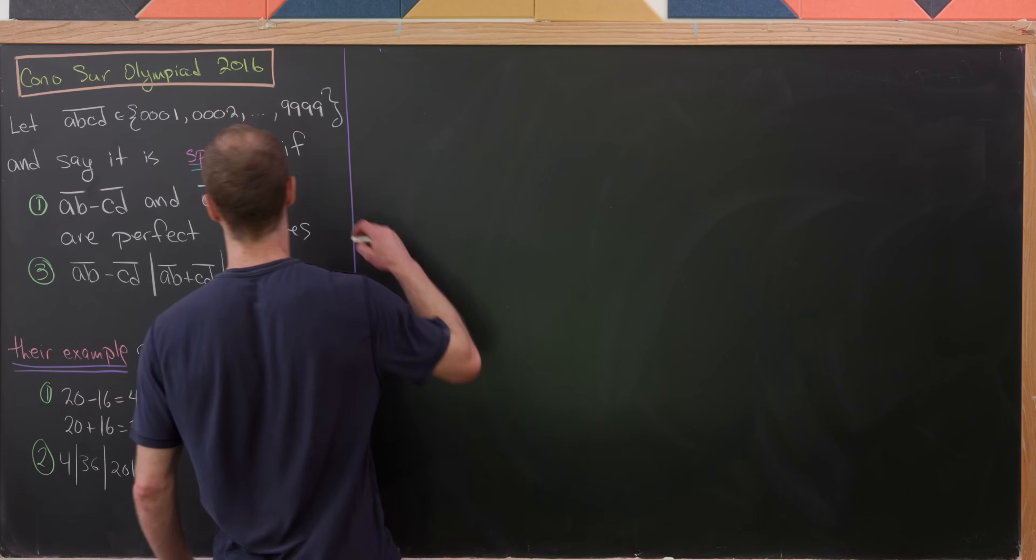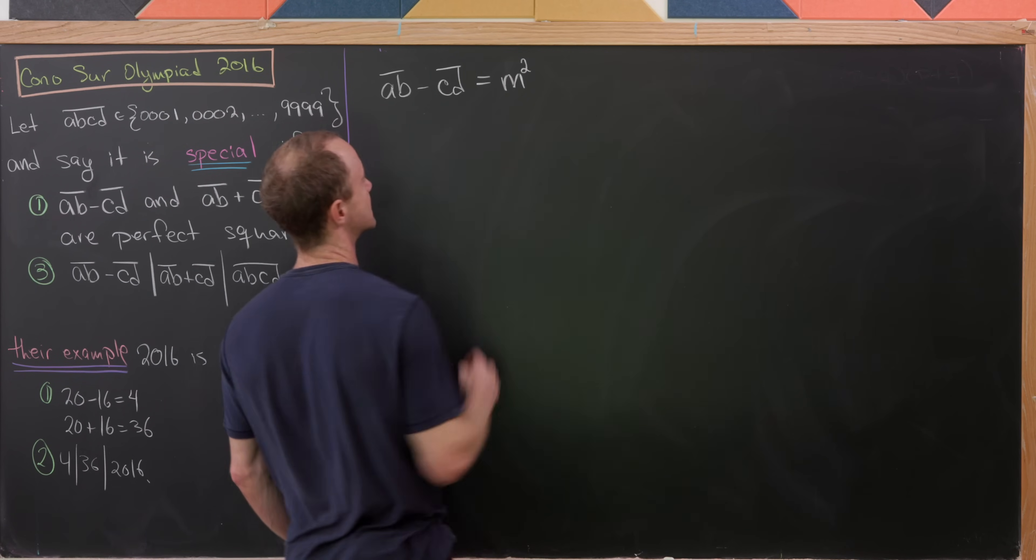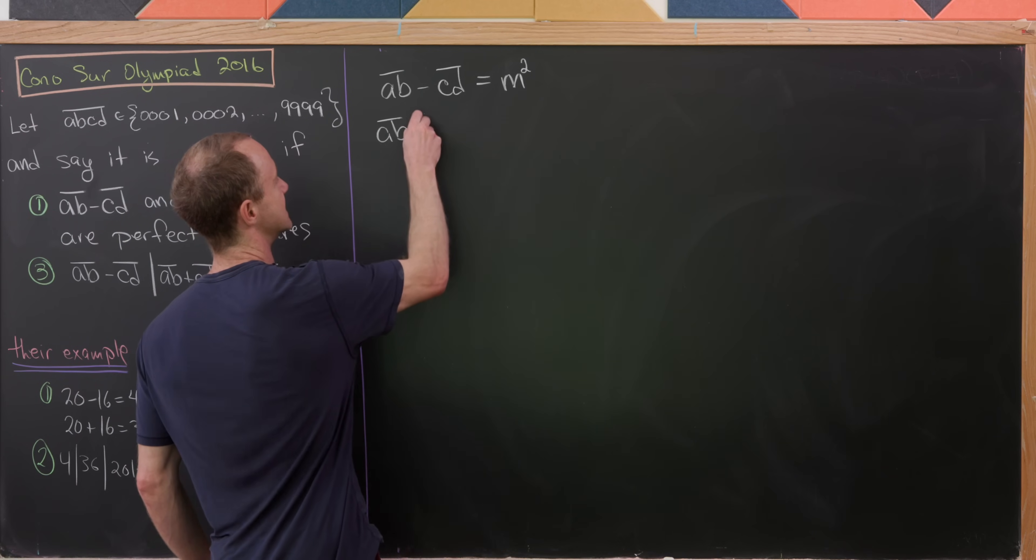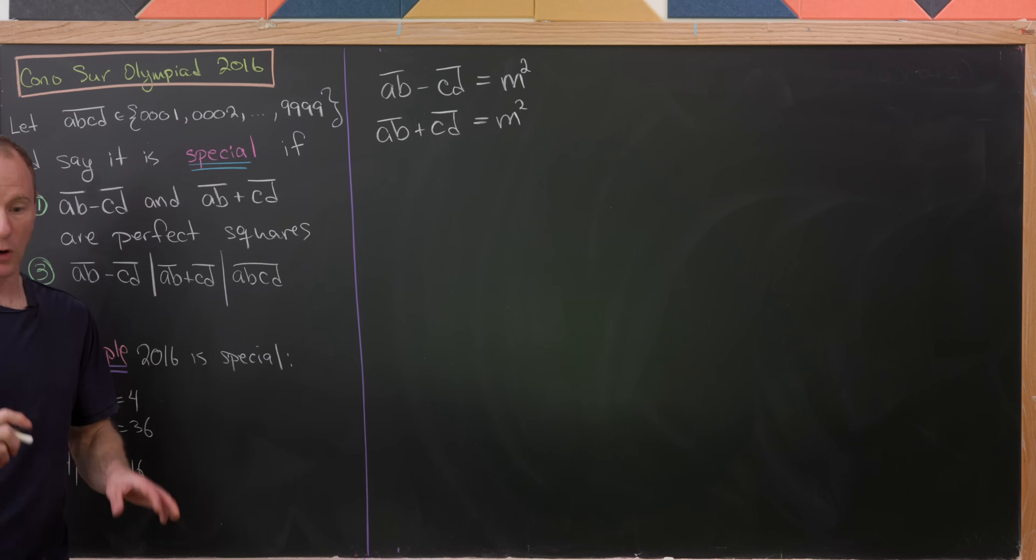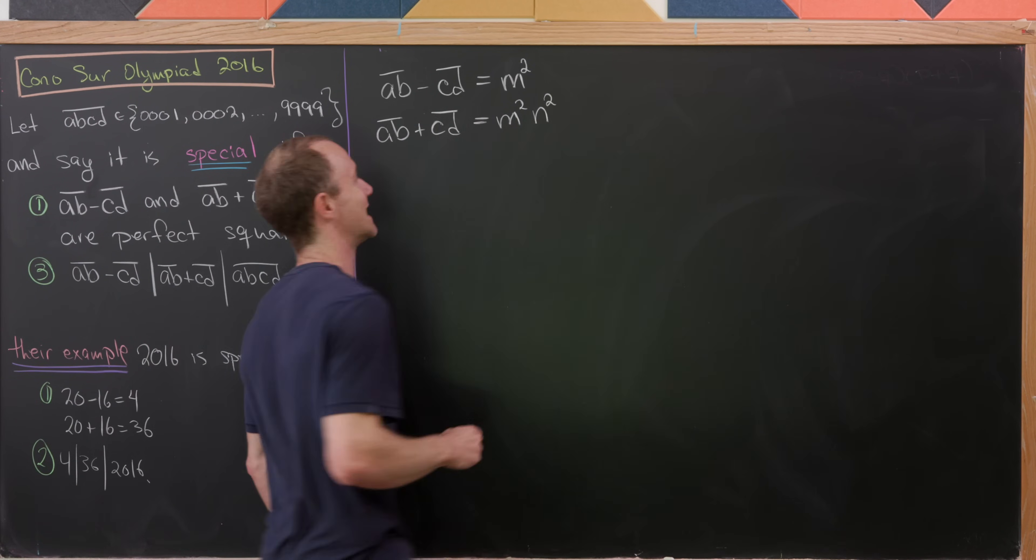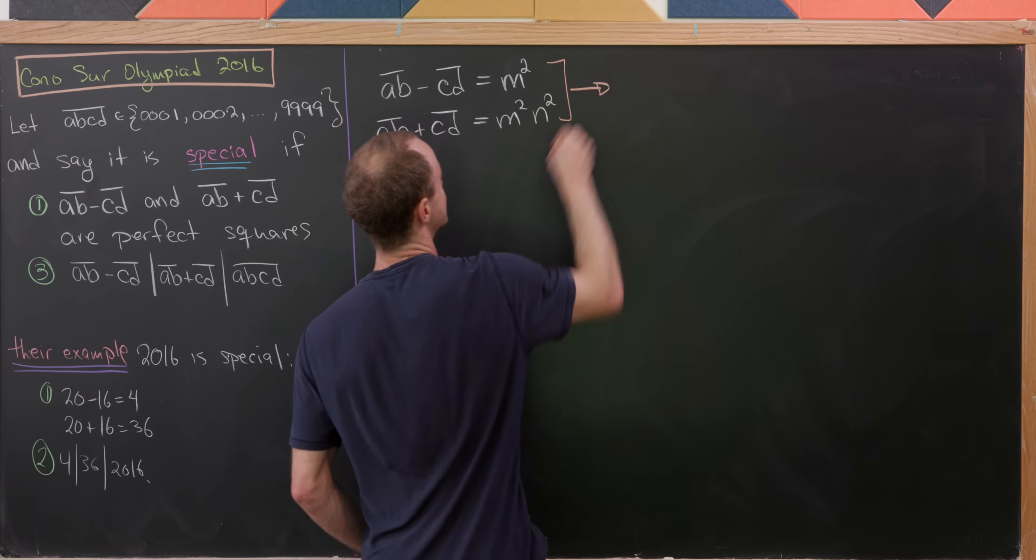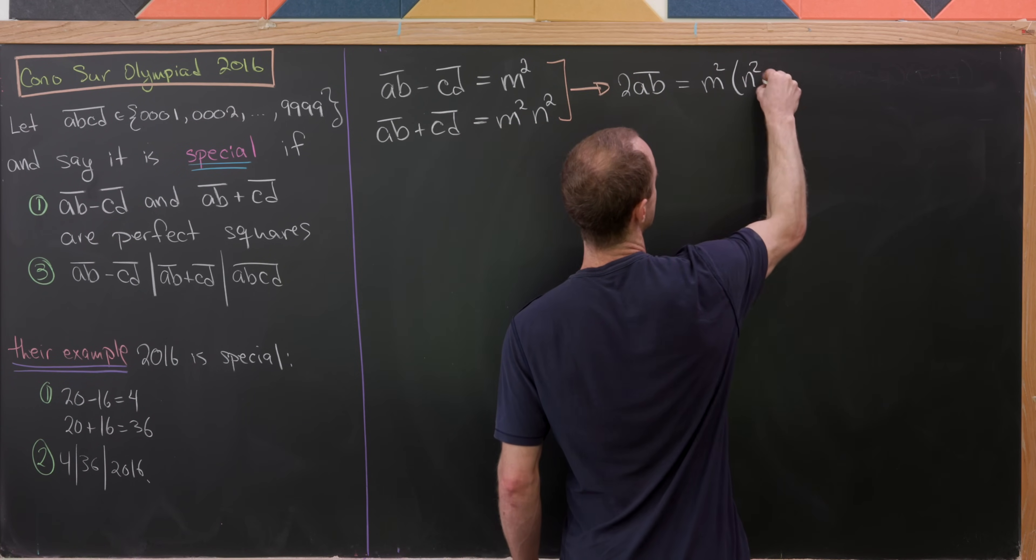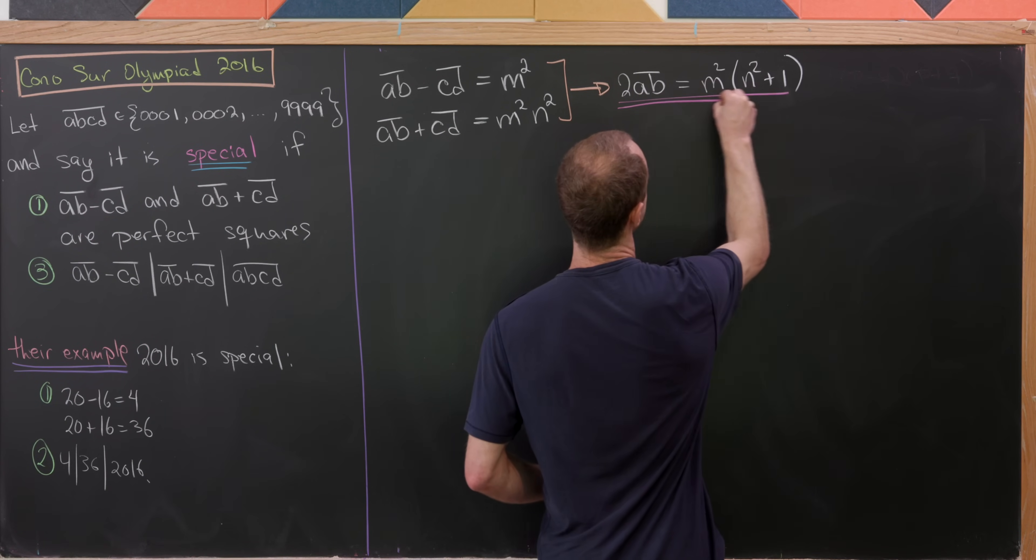Let's start with this first condition. We know that AB minus CD equals M squared, and AB plus CD is a multiple of AB minus CD, so AB plus CD equals M squared times N squared, a product of two perfect squares. Taking the sum gives us 2AB equals M squared times N squared plus 1, an important equation.